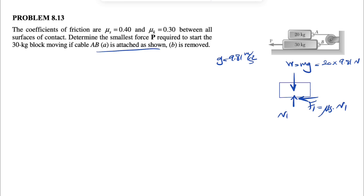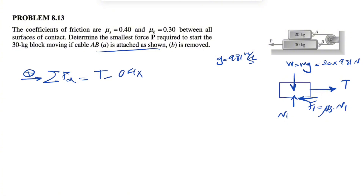Since we need to start the block moving, we have to overcome static friction, so F1 = μs × N1. We are in equilibrium, so sum of all forces equals zero. For the X direction, we have tension minus friction F1, which is the static coefficient 0.4 times N1. We also need to account for the tension in cable AB attached at point A to the 20 kilogram block.